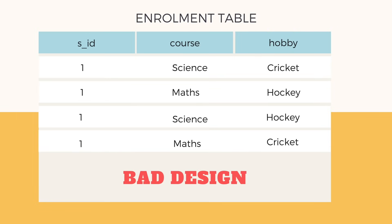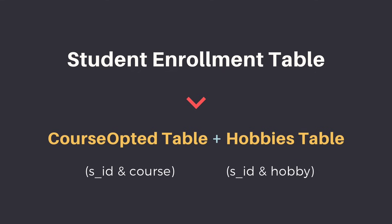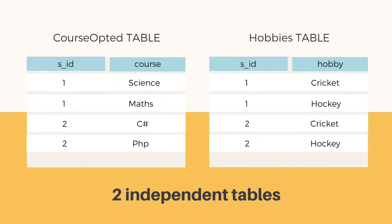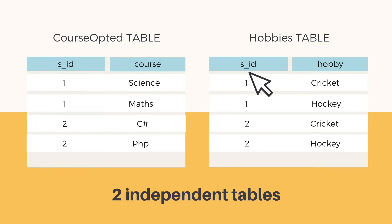Hence it is always advised to keep such attributes in separate independent tables. This table can be decomposed into two tables to solve the problem of multi-valued dependency and to make this relation satisfy the fourth normal form. The decomposed tables will have student ID and course in one table, and student ID and hobby in a separate table.